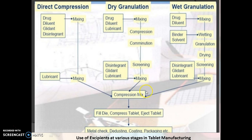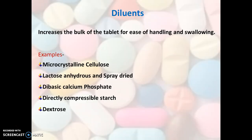This is a typical flow diagram representing the various methods of tablet manufacturing: direct compression, dry granulation, and wet granulation. You can see the use of various excipients during the manufacturing. Whether it is direct compression, dry granulation, or wet granulation, the use of excipients is inevitable. Let us begin in detail with the excipients, starting with the widely used diluents.